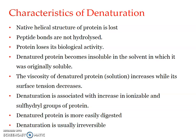Denaturation is usually irreversible. Once a protein is denatured, we cannot bring back the process — it is completely irreversible. For example, when an egg is cooked or an omelette is prepared, reversal is not possible. The protein denatured during the heating of an egg is albumin, which is getting denatured. It cannot be reversed. Furthermore, denatured protein cannot be crystallized. These are all characteristic features of denaturation.